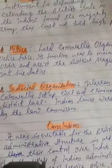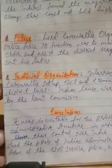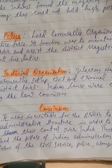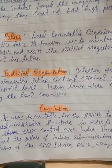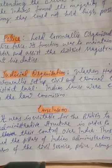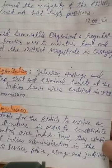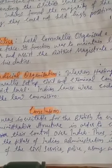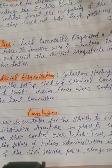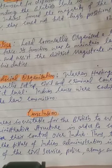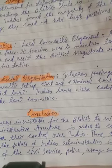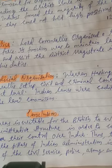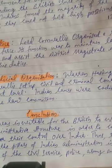In conclusion, it was inevitable — that is, unavoidable — for the British to evolve, meaning to gradually develop, an administrative structure in order to consolidate, meaning combine, their control over India.